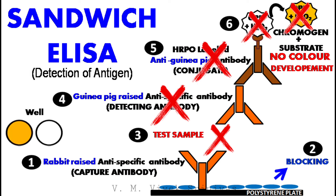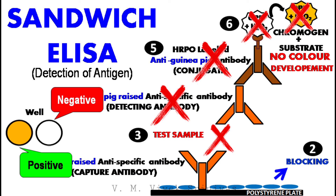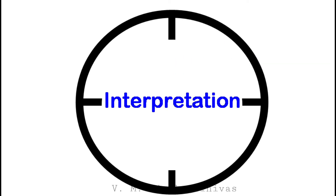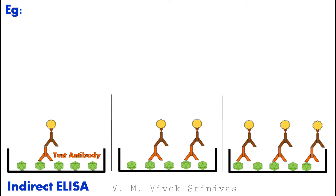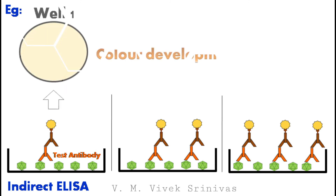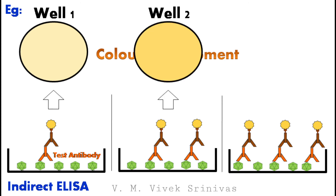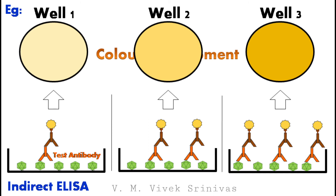So here also, lack of color development indicates the test sample is negative, and color development indicates the test sample is positive. How is color development interpreted? The degree of color development completely depends upon the quantity of antigen or antibody in the test sample. For example, in indirect ELISA, the lower the antibody level, the lesser the color development, and the higher the antibody level, the more the color development.